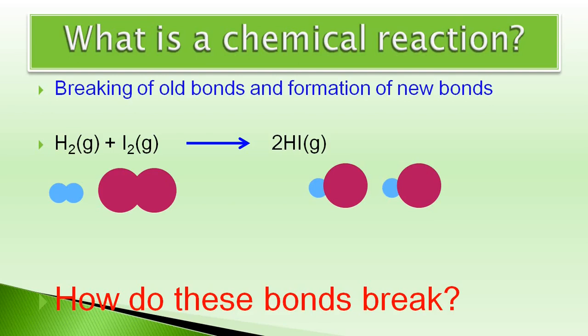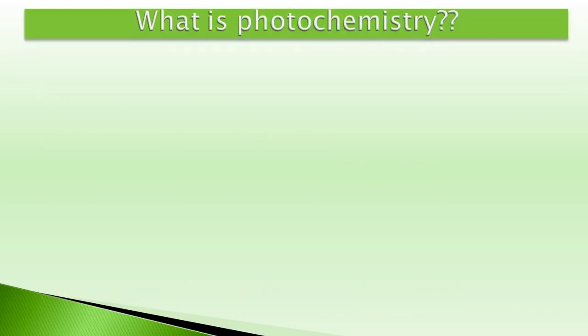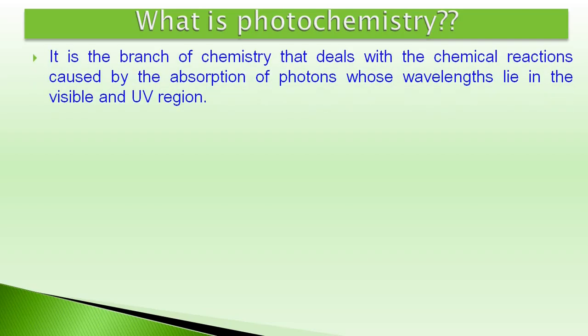Let us start another basic question. What is photochemistry? Photochemistry can be defined as the branch of chemistry that deals with chemical reactions caused by the absorption of photons whose wavelengths lie in the visible as well as ultraviolet region.